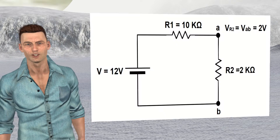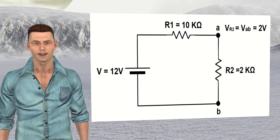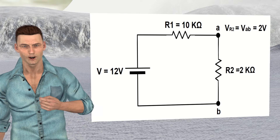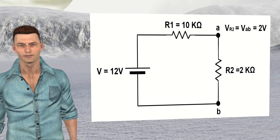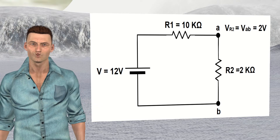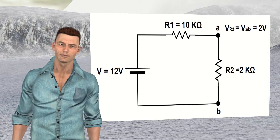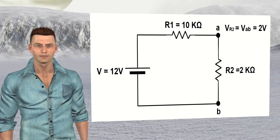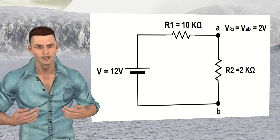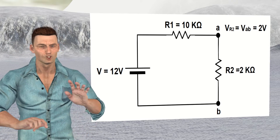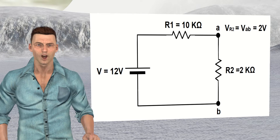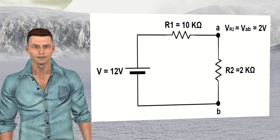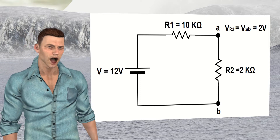Let's now look at the influence of the input impedance in a simple circuit. Let's suppose a circuit made up of a DC voltage source V of 12 volts and two resistors in series: R1 of 10 kilo ohms and R2 of 2 kilo ohms. Ohm's law theoretically indicates that for these conditions, in R1 there is a voltage drop of 10 volts and in R2 there is a voltage drop of 2 volts, and the current supplied by the battery will be 1 milliamp.